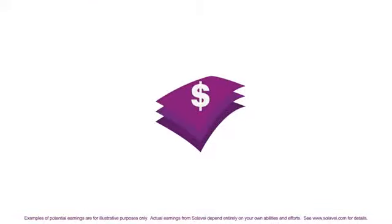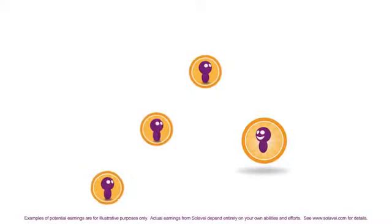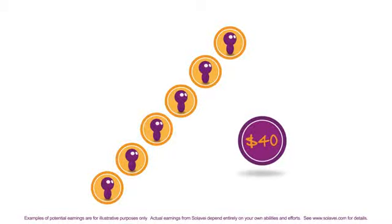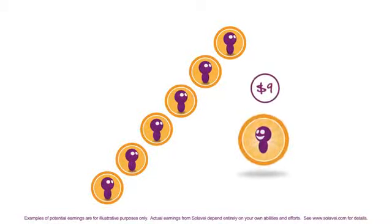How much you earn is up to you, but let's try an example. If you share Solovey with three friends and they sign up for service, you get $20 a month. Six friends, $40 a month. Now your phone service is only costing you $9 a month.